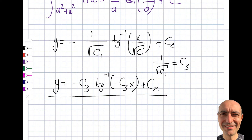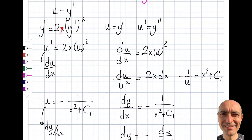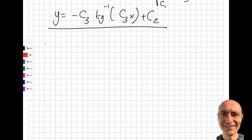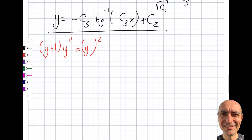This establishes the process when y is missing from the equation — I had x but no y. Now I'll do another example: (y+1)·y'' = (y')². What's missing here? There is no x — only y appears. So x is missing, and I can still apply the substitution approach since this is second order.